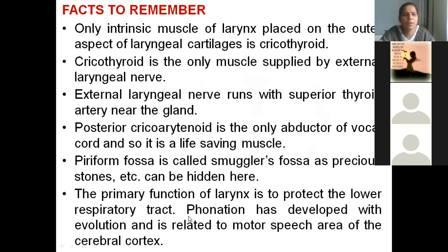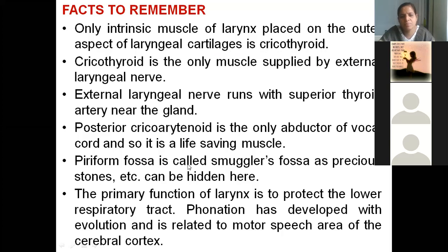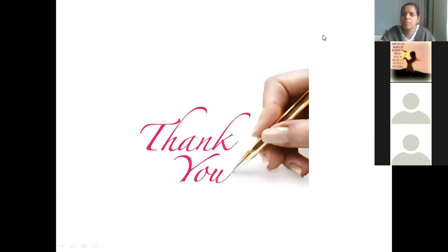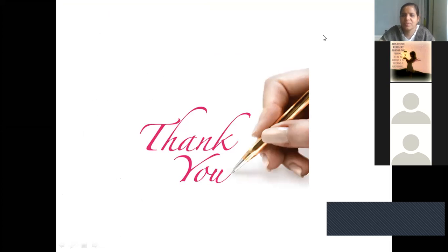The only intrinsic muscle of larynx placed outside is cricothyroid — supplied by the external laryngeal nerve. Pyriform fossa is also called smuggler's fossa. Primary function of larynx is respiration, and phonation was developed as an evolution — it's related to the motor speech area of the cerebral cortex. I hope you understood.